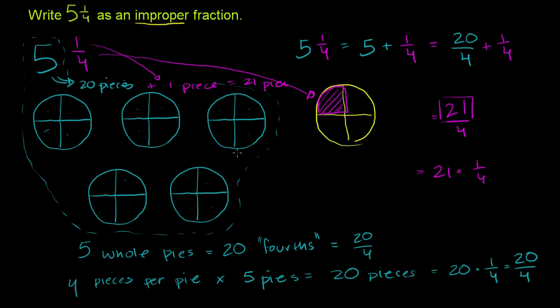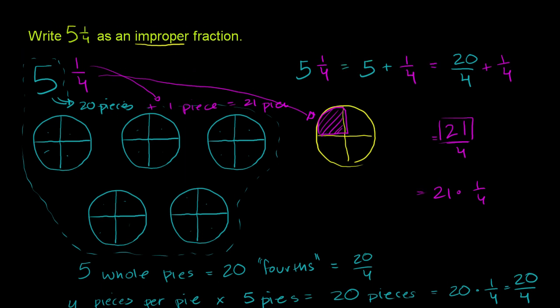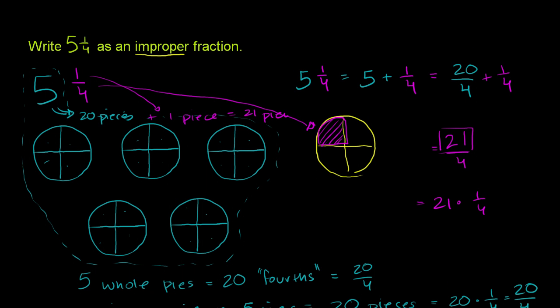Now, I've gone through great pains to give you the intuition of what 5 and 1/4 means. But there is a fairly straightforward process for getting straight to the improper fraction. If you have, let me color code it. So if you have 5 and 1 over 4, to convert it into an improper fraction, you literally, you're going to keep the same denominator. So you're going to have the over 4 there. But your numerator is going to be your numerator of the fraction part before, so it's going to be 1 plus your whole number times your denominator.